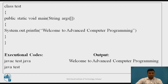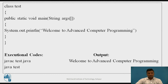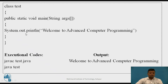This is a very basic program. Always remember, the program always starts with the class keyword — here 'test' is the class name. 'public static void main(String args[])' is the main statement used in any program. To print a statement, word, or letter on the screen, we use System.out.println. For example, System.out.println("Welcome to the advanced computer programming") will print that statement on the screen.